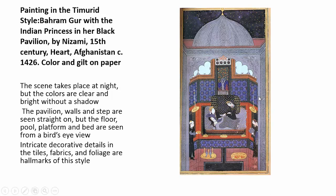Another Timurid painting is called Bahram Gur with the Indian Princess, a secular scene taking place at night. These Timurid paintings are wonderful in the way they create abstracted spaces using pattern and color and luminosity. There are no shadows — we don't see chiaroscuro the way we do in western art. The floor, pool, platform, and bed are tilted up. We'll see some of this tilting idea in early medieval art, but it isn't quite as flat as this.